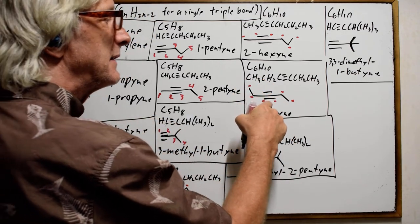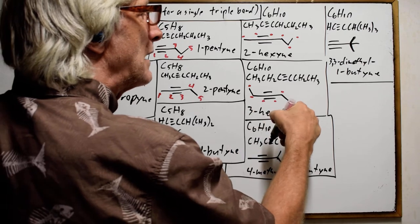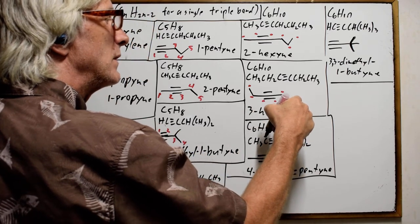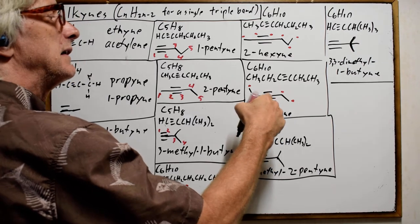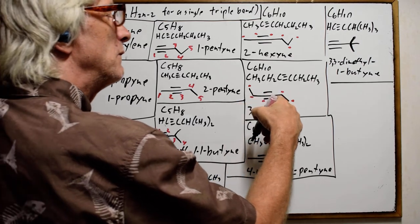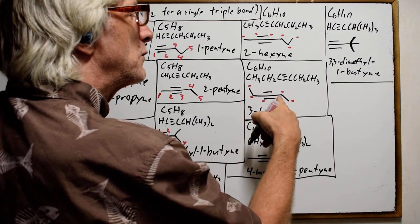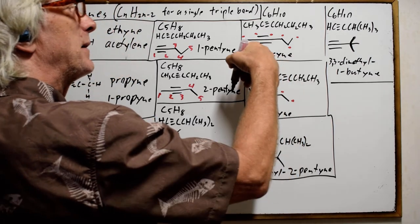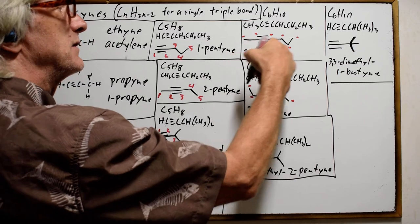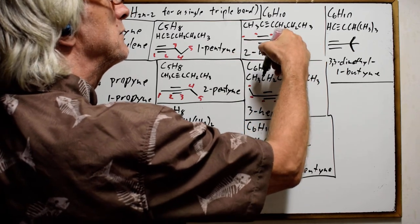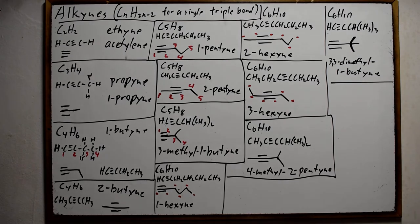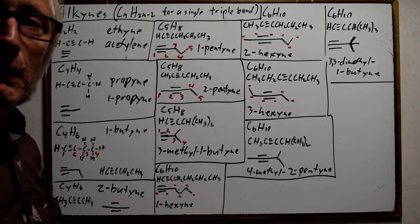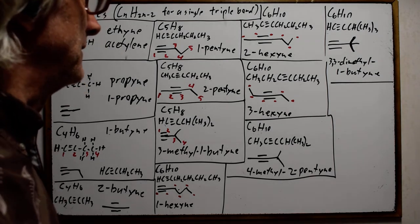Three-hexyne is the highest we can get, because counting from the other side still gives three. If we tried to name it 4-hexyne, counting from the right would give one, two, three, four — making it actually 2-hexyne when we count from the lower end. So there is no possible 4-hexyne; we simply count from the other side and it becomes 2-hexyne.